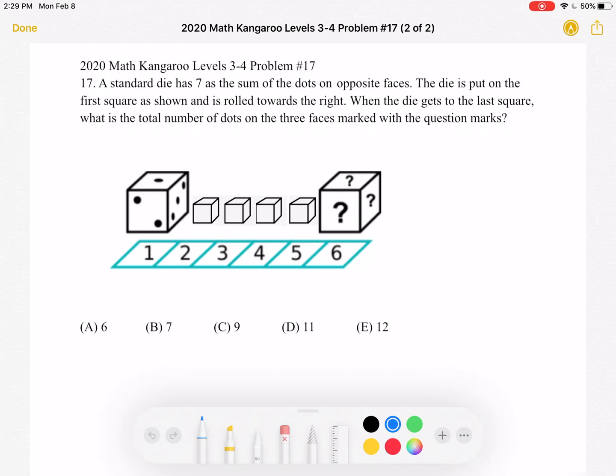So let's start by taking a look at the cube and the position it's in when it's on square number 1. On this front face, we see 2, on the top we have 1, and on this right side we have 3.